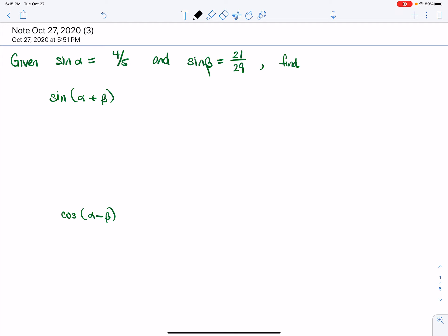So looking at this first example here, let's say we're given that sine of alpha is 4/5 and sine of beta is 21/29. We'll assume that they're both in quadrant one. We want to find the sine of the sum of the two angles and we want to find the cosine of the difference between the two angles.